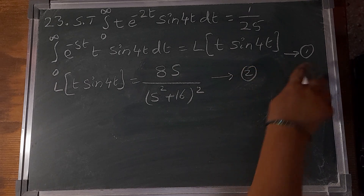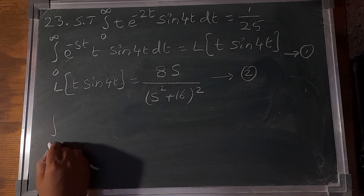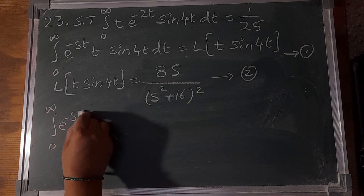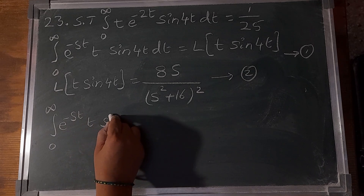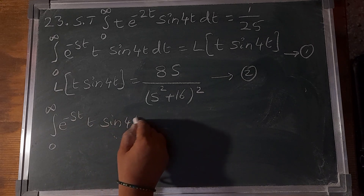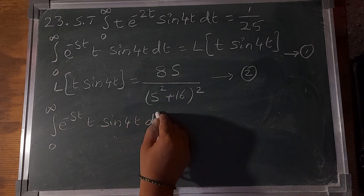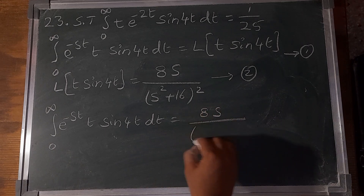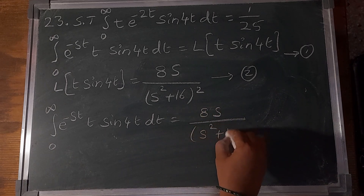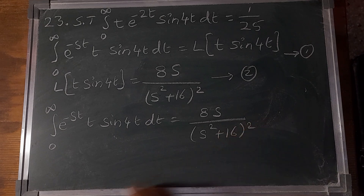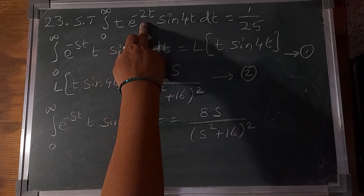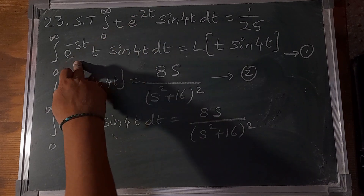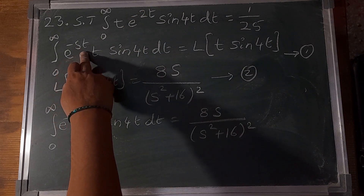Substituting equation 2 into equation 1: the integral of 0 to infinity e^(-st) t sin(4t) dt equals 8s/(s² + 16)². In the problem we have e^(-2t), so comparing, s = 2.